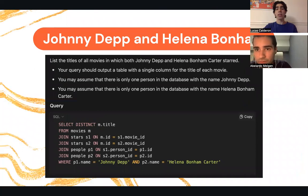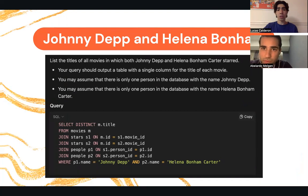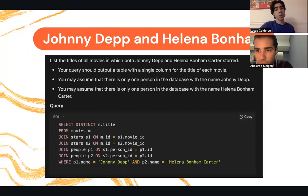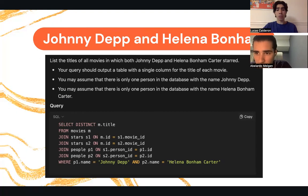For Johnny Depp and Helena Bonham Carter, we had to list the titles of all movies in which both actors starred. The query has a single column for the title of each movie, assuming there is only one person in the database with each name. We SELECT DISTINCT m.title FROM movies, where both of them starred, using stars aliases s1 and s2, matching each movie ID and the people for the specific actors Johnny Depp and Helena Bonham Carter.